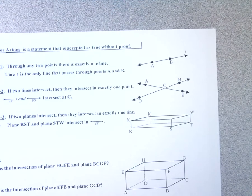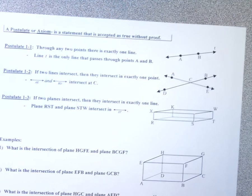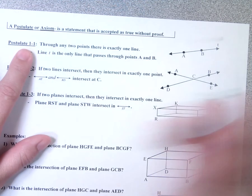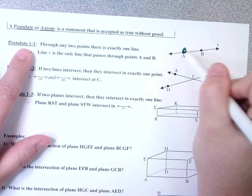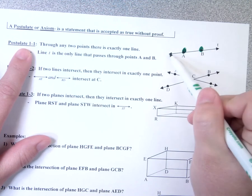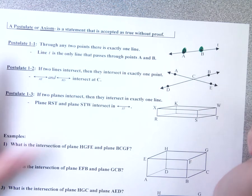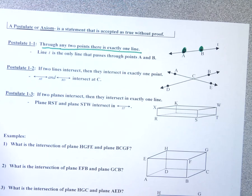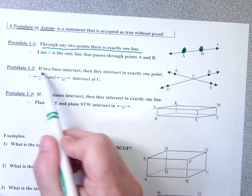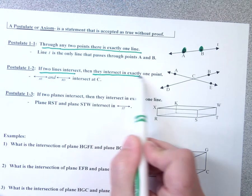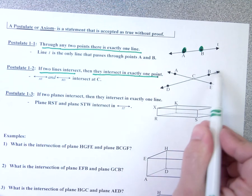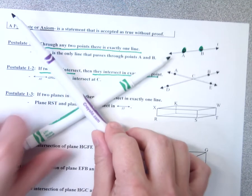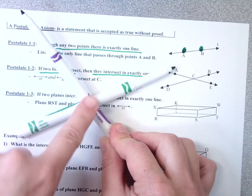A couple of postulates to talk about: the first says through any two points, there's exactly one line — no matter what two points you draw, you can only draw one line through them. The other is: if two lines intersect, they intersect in exactly one point. These two lines intersect at point C. Whenever two lines intersect, they intersect in just one point.